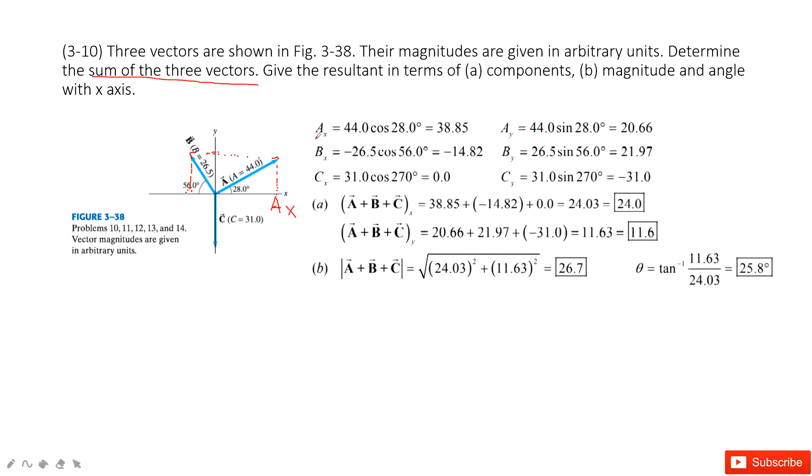First, we project the components in the x-direction. So Ax is 44 times cosine theta, and then Ay is 44 times sine theta. In this triangle, Ay is 44 sine theta.